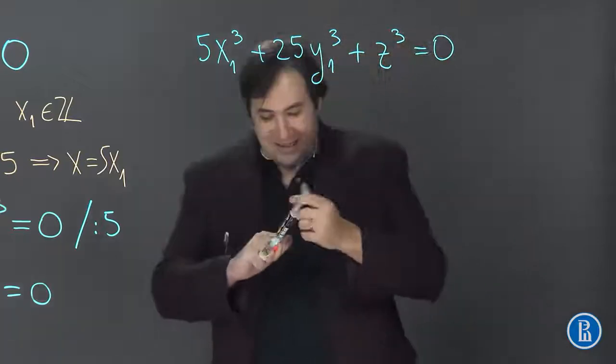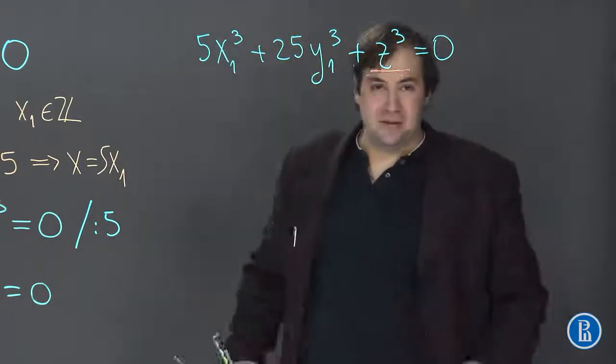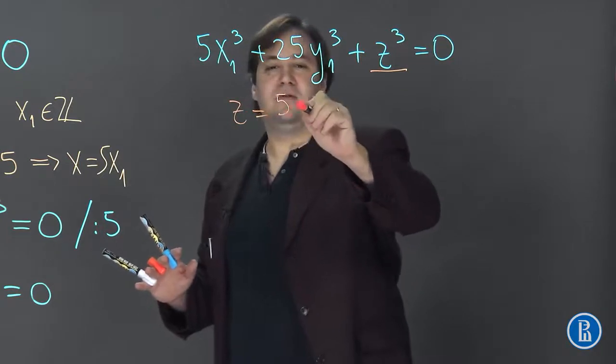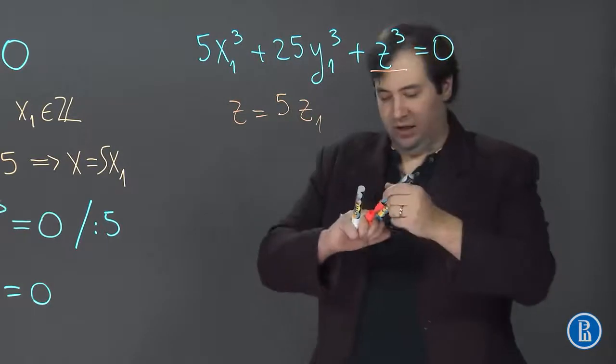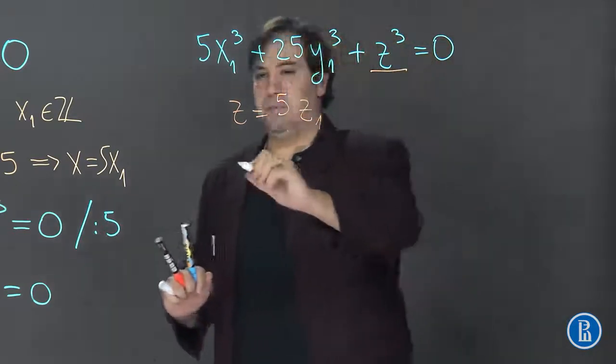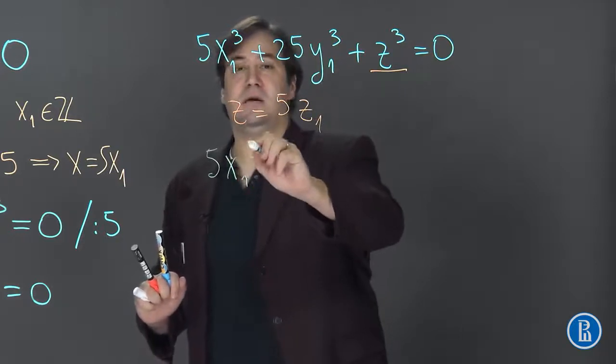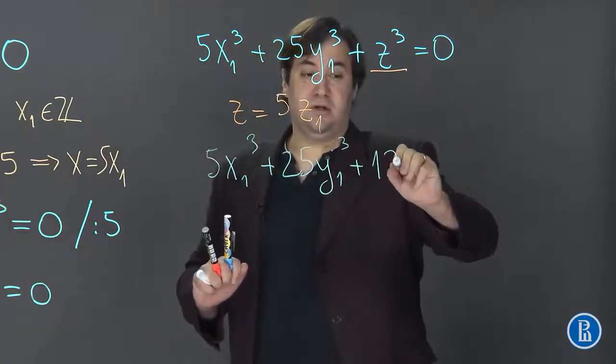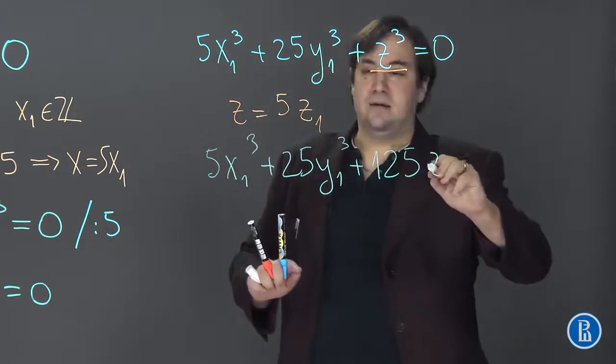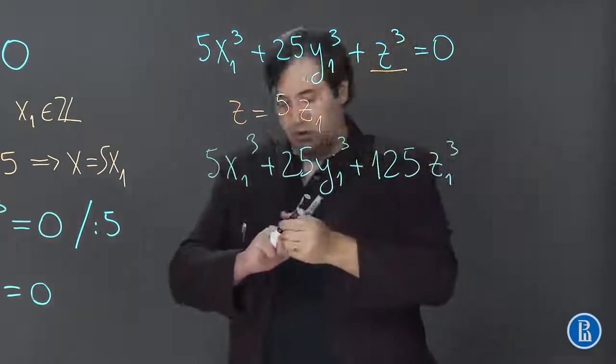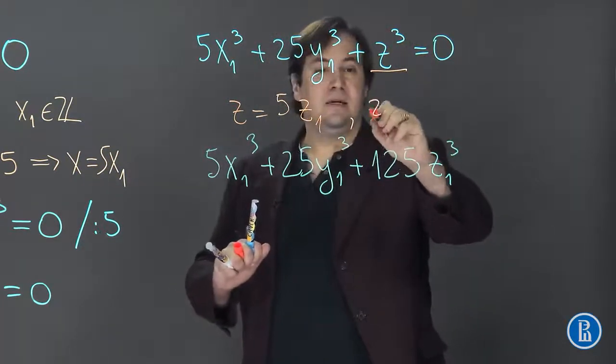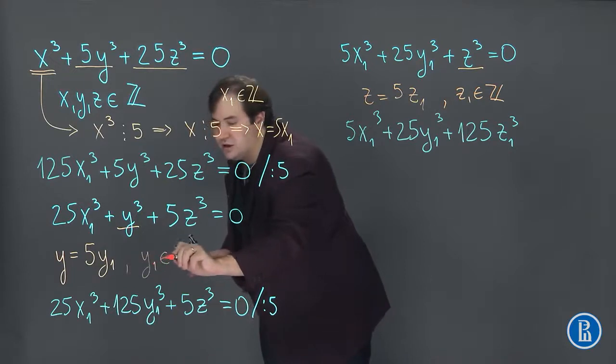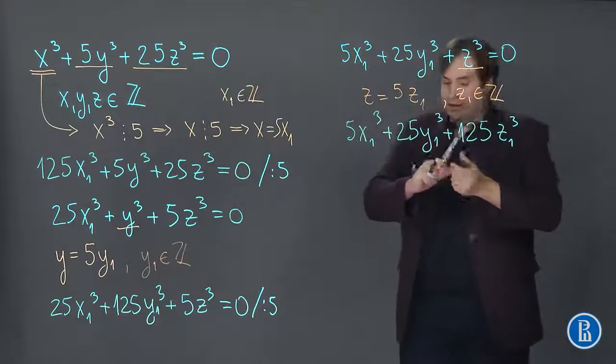And now this time we see that z³ should be divisible by 5. So z should be divisible by 5. So z is equal to 5z₁ and now we substitute this into the equation and we obtain the new equation.